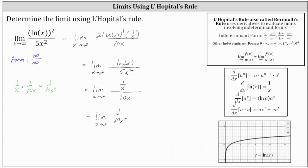Now we can evaluate the limit. The numerator stays at 1 while the denominator increases without bound. Therefore, the function values approach 0, which means the original limit is also equal to 0.